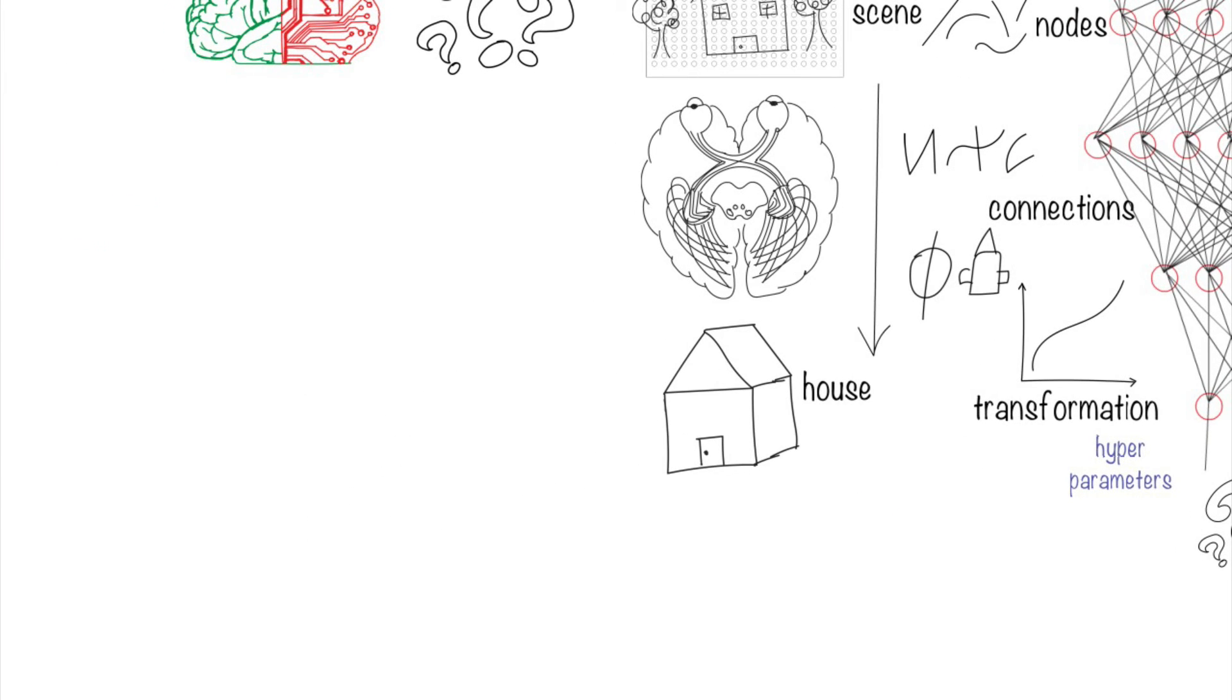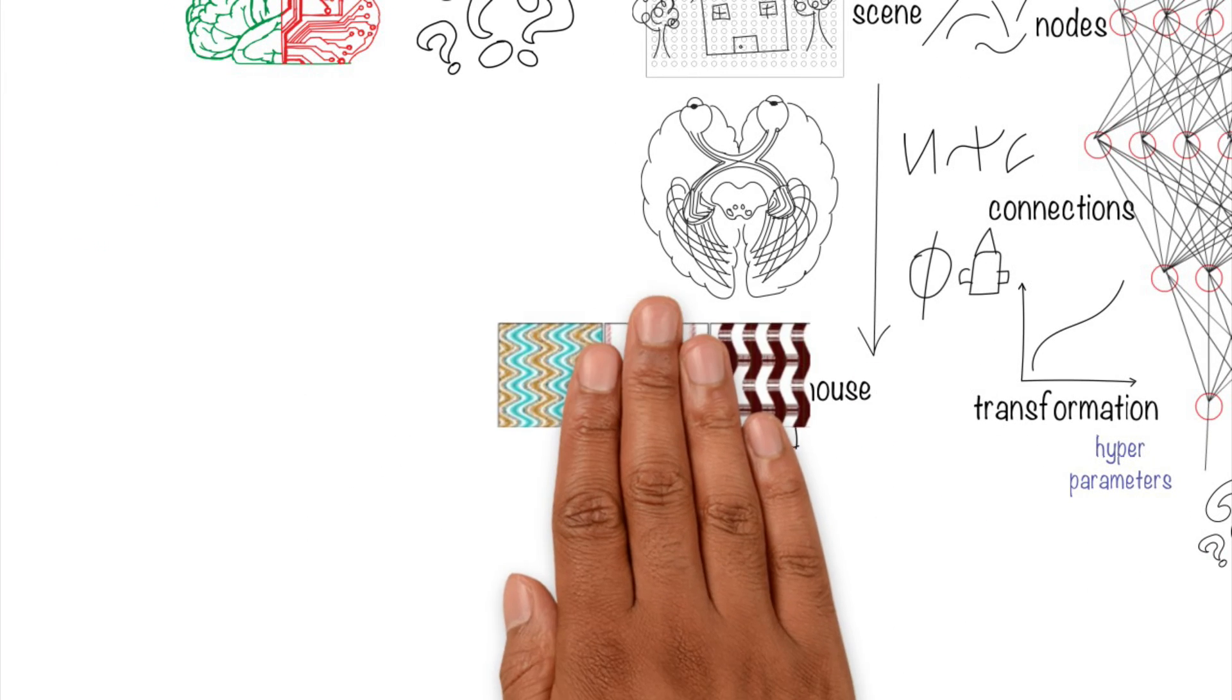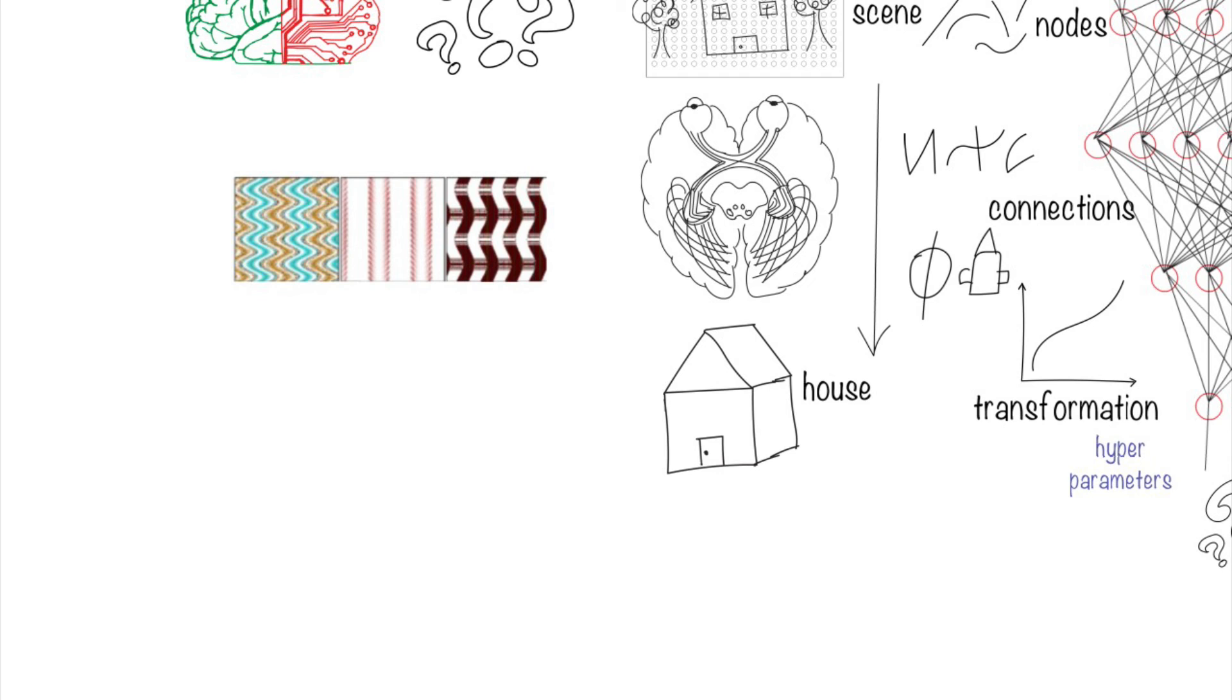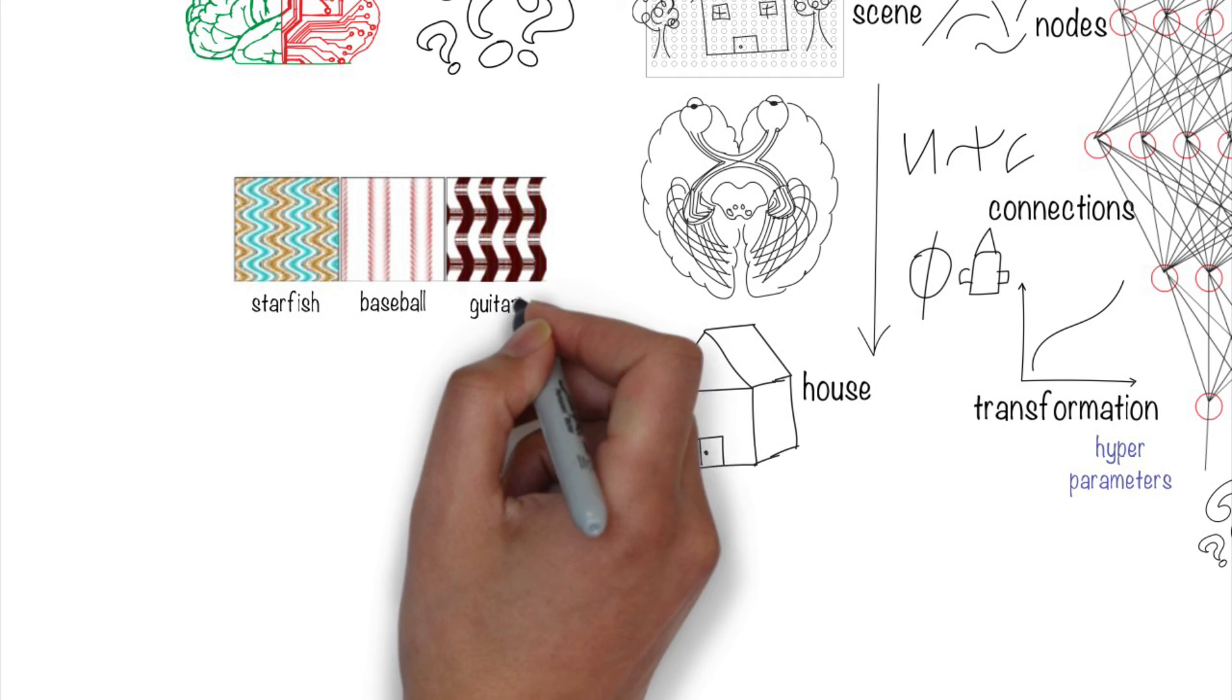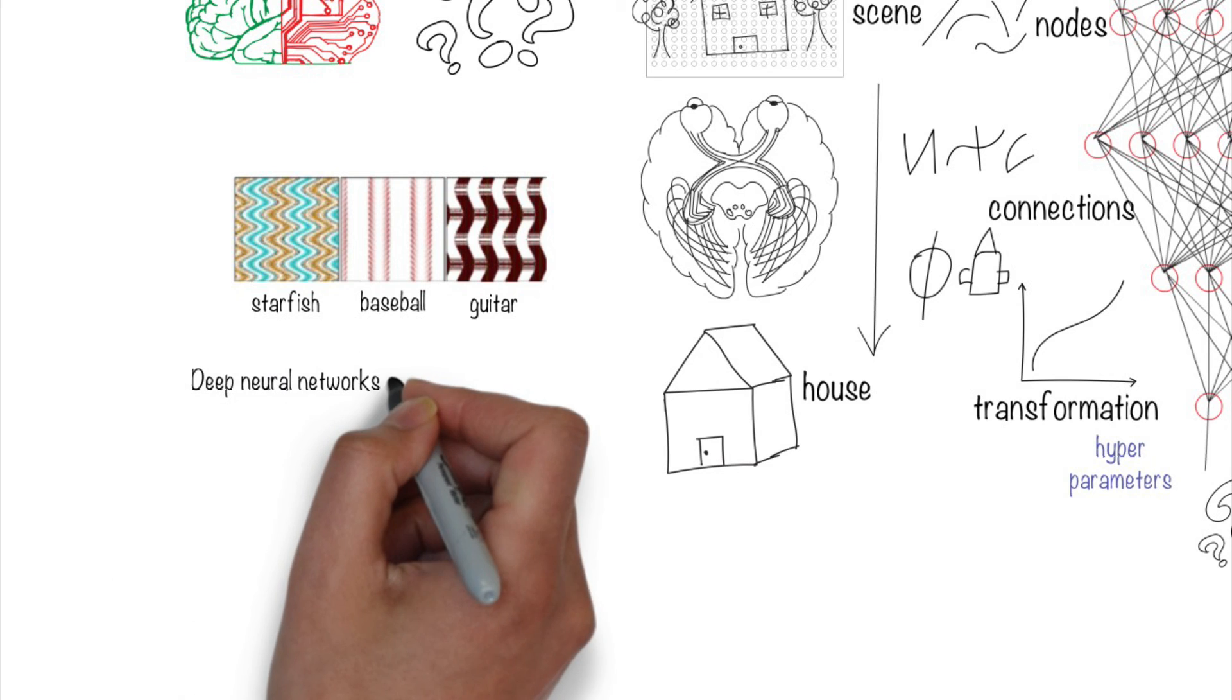That's why sometimes we have deep neural networks incorrectly identifying totally random patterns as starfish, baseball, and guitars with 99% confidence.